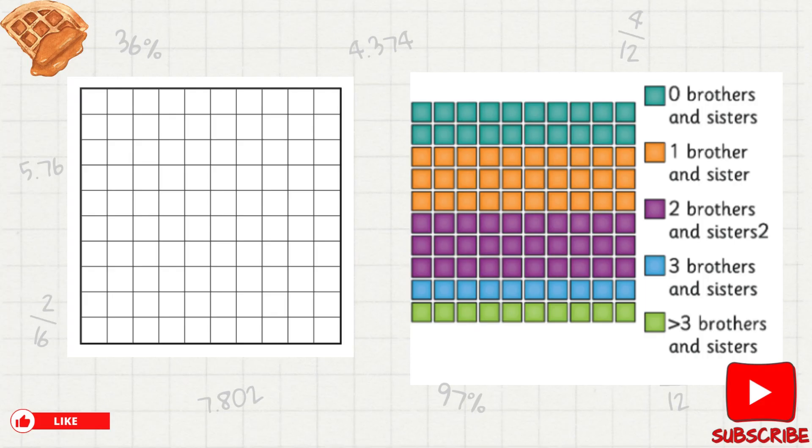So what exactly is a waffle diagram? Think of it as a grid made out of tiny squares, just like the pockets on your favorite waffle. Each square represents a unique data and by filling in or coloring these squares we can show percentages and proportions.